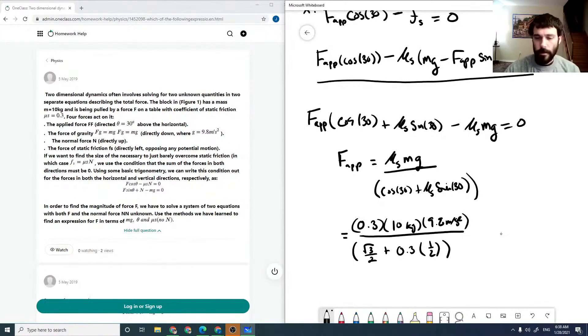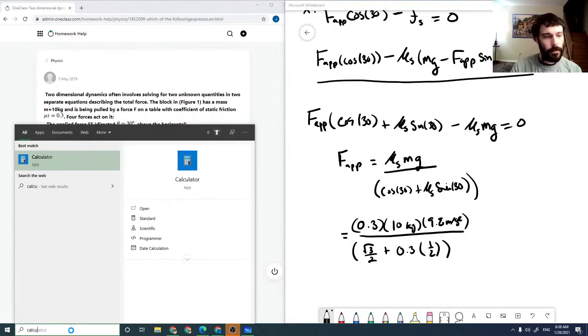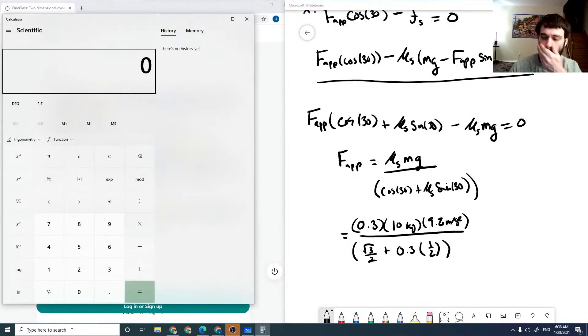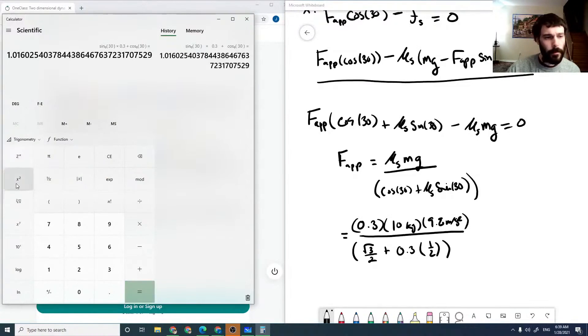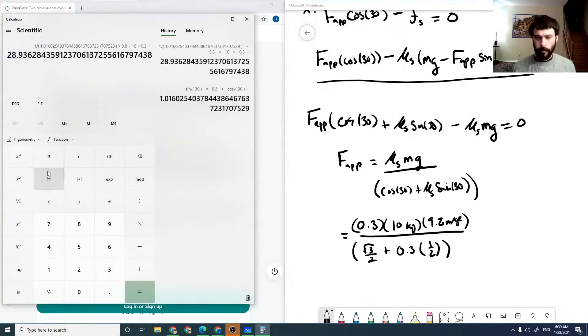I actually didn't do this, so I'll just do it now. So that's our denominator. This is 28.94 Newtons.